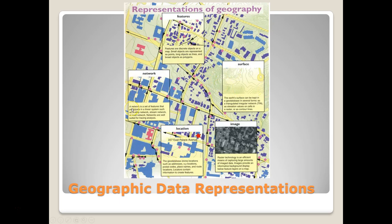We also have network data, like a stream network or a road network, as a way of representing geography. There are lots of different ways of representing geography within a GIS, and you can use these all in combination and in tandem with one another.